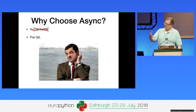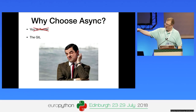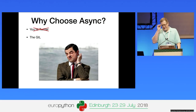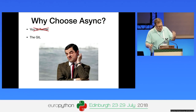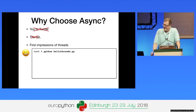Another response we sometimes get is, well, there's the global interpreter lock. I sort of feel bad about that because I sort of blew up the GIL like eight years ago in some talk and everybody points at it. But if you get into asynchronous programming, it doesn't really solve the GIL — you still have it. You're just getting rid of threads. You're not getting any real benefit related to that.